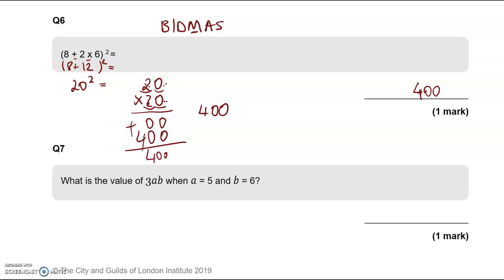In question number 7, what is the value of 3AB when A equals 5 and B equals 6? So 3 lots of AB. There is no operation that you can see between 3, A, and B, which means it's multiplication. So 3 times A is 5 times B is 6. You could do them in whichever order you want. 3 times 5 is 15 times 6. 6 lots of 5 is 30, carry the 3. 6 times 1 is 6, and the 3 gives us 9. So the answer is 90.